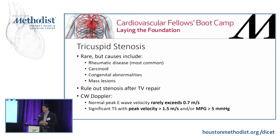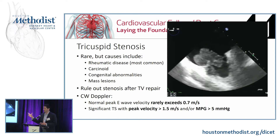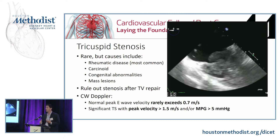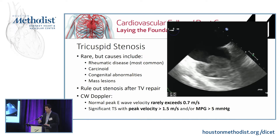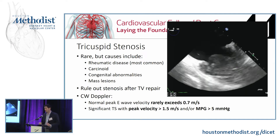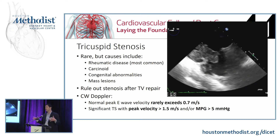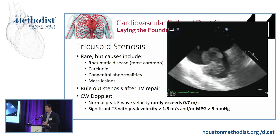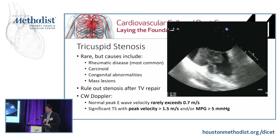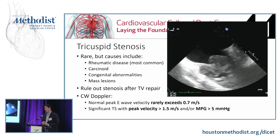Tricuspid stenosis is rare — most commonly from rheumatic disease, usually occurring alongside left-sided valve disease. Carcinoid can cause it, as can congenital abnormalities or a large mass causing obstruction, as in this patient with a malignant carcinoma on the tricuspid. Knowing the criteria for tricuspid stenosis is most useful when assessing a repaired valve to see if the repair has caused stenosis. Under normal circumstances, velocities through the tricuspid rarely exceed 0.7 m/s given the large annulus.